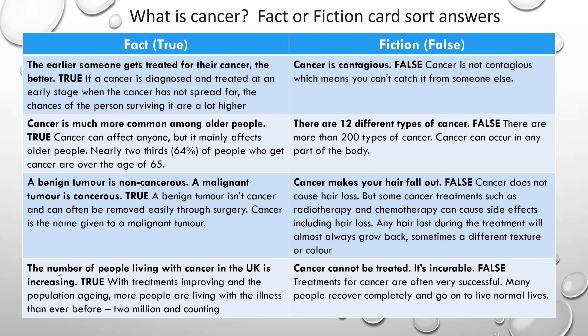A true statement: 'A benign tumour is non-cancerous and a malignant tumour is cancerous.' A benign tumour isn't actually cancer as such, and it can often be removed easily through surgery. Cancer is the name given to a malignant tumour — a tumour that has the ability to spread to other places, grow rapidly out of control, and cause damage to that organ. Another fiction: 'Cancer makes your hair fall out.' This is false. The cancer itself does not cause hair loss, but some treatments like radiotherapy and chemotherapy can cause side effects including hair loss. However, any hair loss during treatment will almost always grow back — sometimes a different texture or colour.